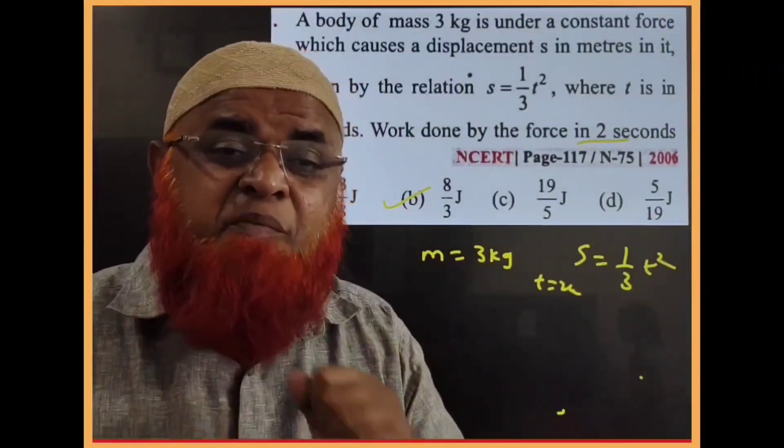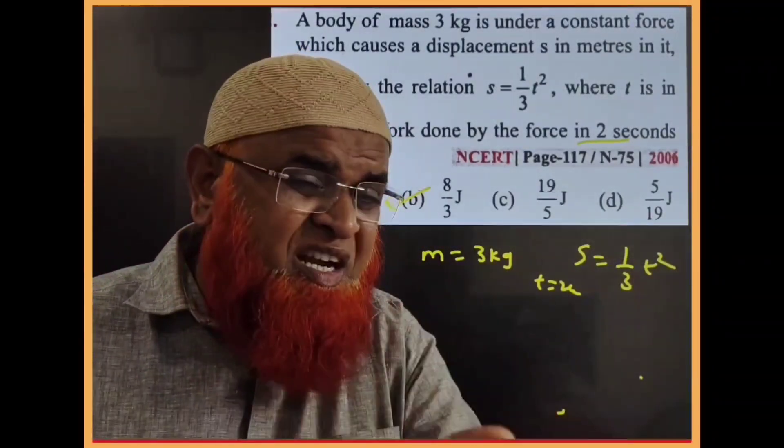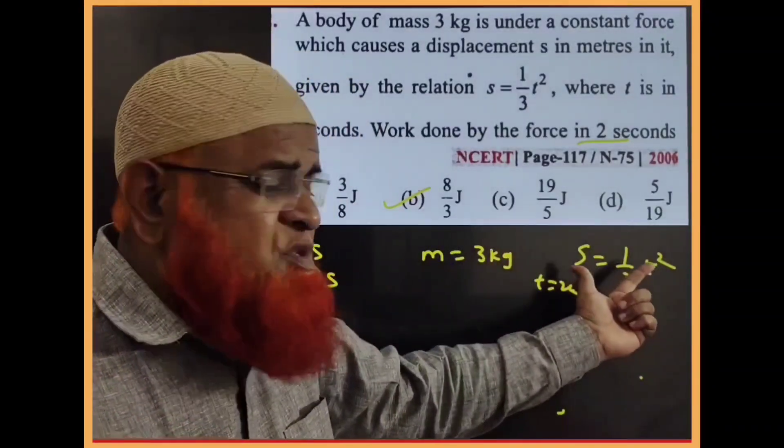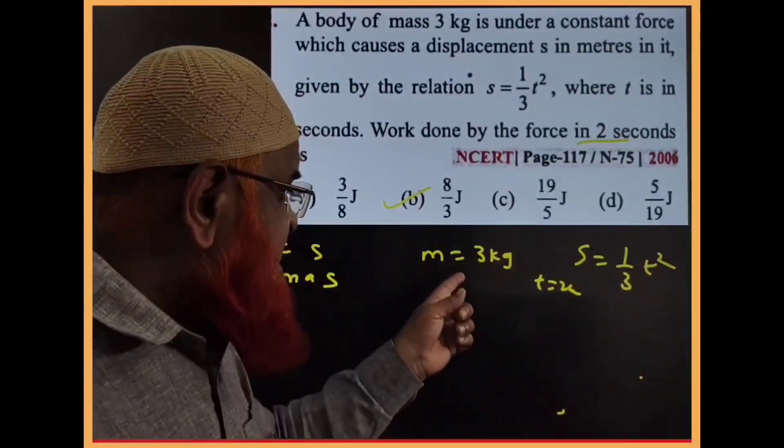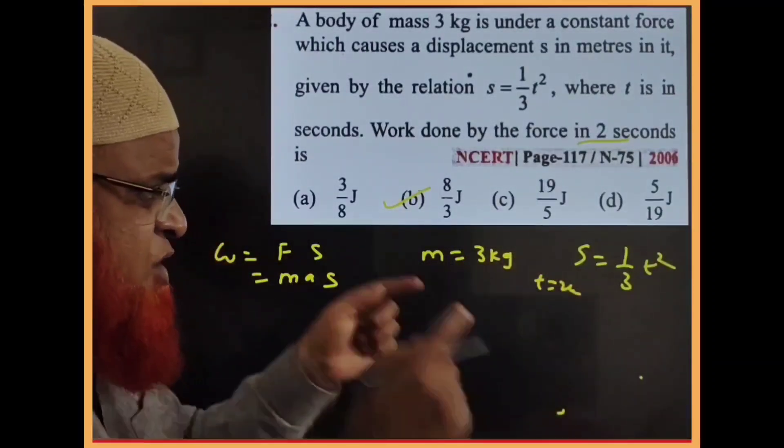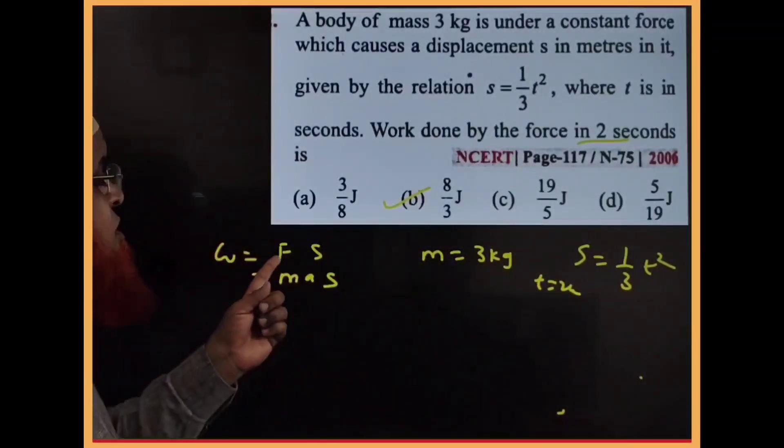Today I'm discussing a work-power-energy problem without using integration or differentiation for NEET students. Here, displacement is given as s = (1/3)t² with mass given, and we need to find work done in 2 seconds. Work done equals force times displacement, which is mass times acceleration times displacement.